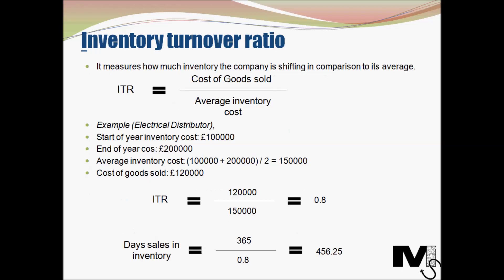The next type of efficiency ratio is the inventory turnover ratio, which measures how much inventory the company is shifting that year compared to its average. We take into account the cost of goods in inventory at the start of the year, the cost at the end of the year, and the cost of goods sold. The formula is: inventory turnover ratio equals cost of goods sold divided by average inventory cost.